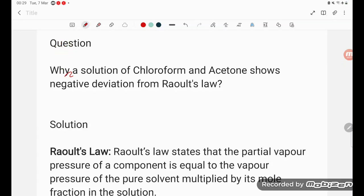Hello students. Why does a solution of chloroform and acetone show negative deviation from Raoult's law? Chloroform is CHCl3 and acetone is CH3COCH3.